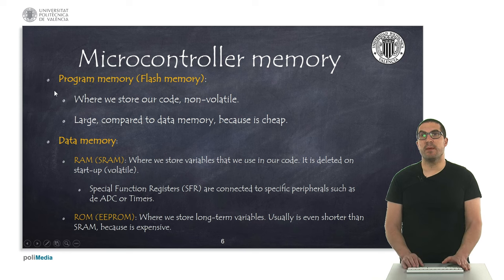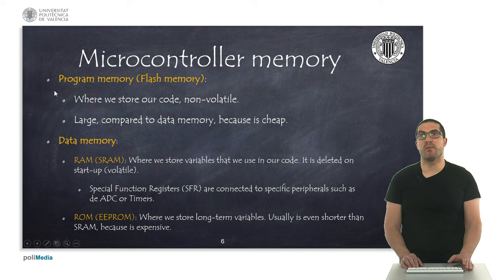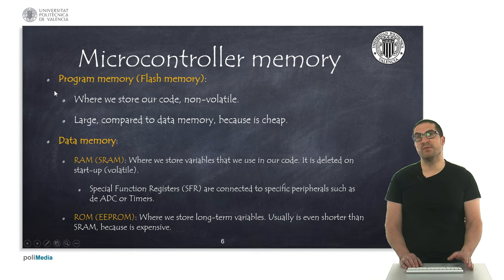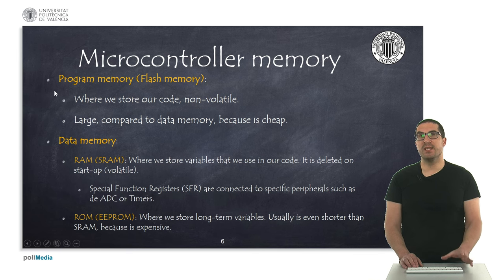For data memory, we have two different types. We have RAM memory, which is volatile — we can store variables used in our code, but they will be fully deleted whenever we start up the microcontroller. We also have a special kind of memory called ROM, or specifically EEPROM, where we store long-term variables. It is non-volatile so we can use those values across sessions, but it is generally smaller because it is quite expensive.